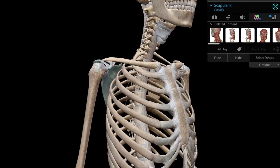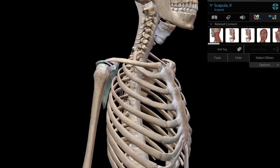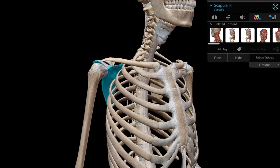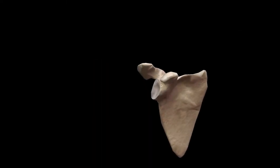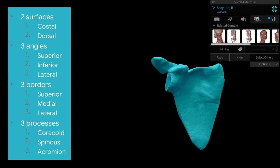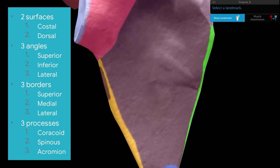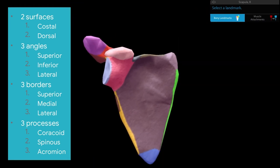Pure abduction needs to be at 45 degrees, midway between the coronal and the sagittal planes. Let's isolate the bone — it consists of two surfaces, three angles, three borders, and three processes.